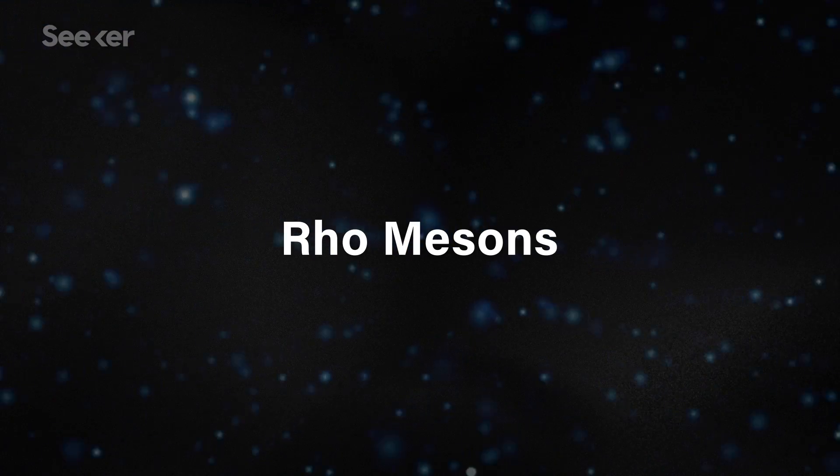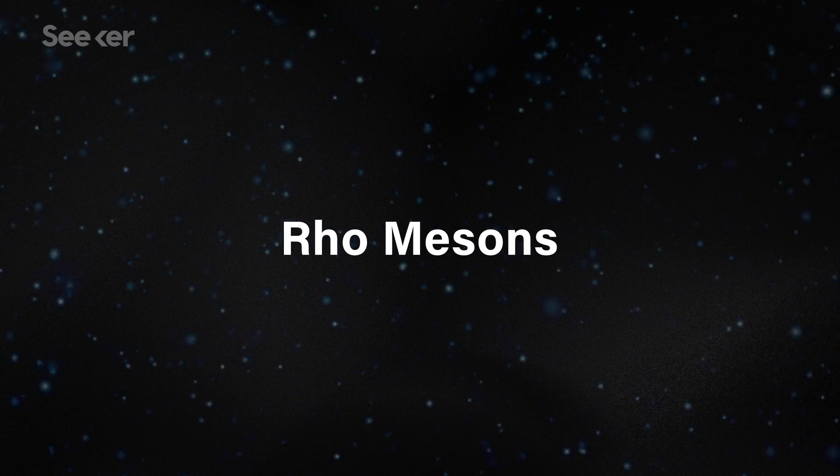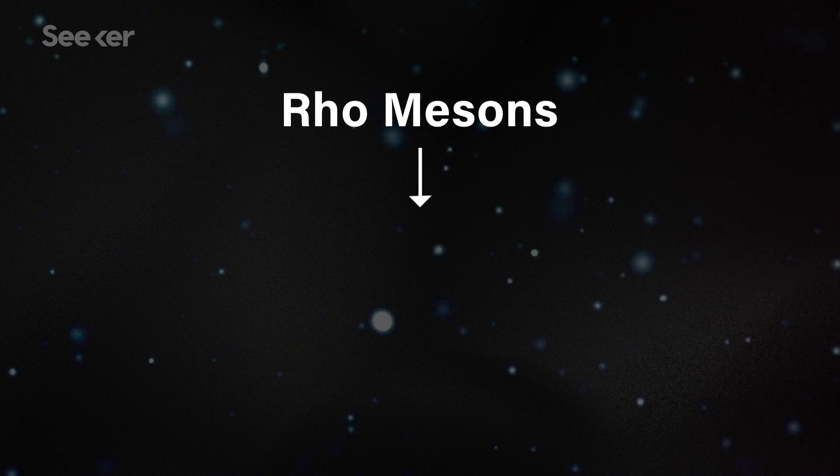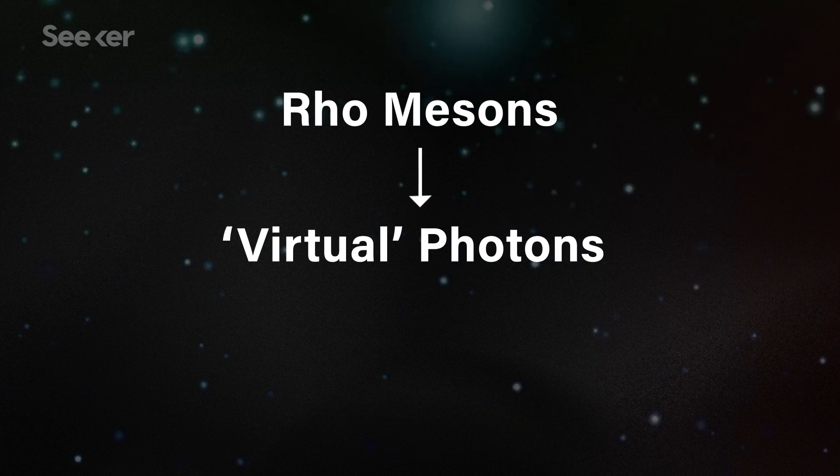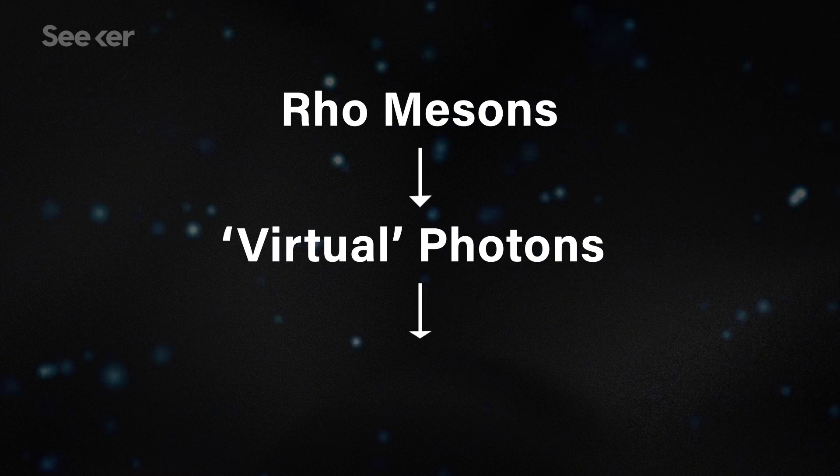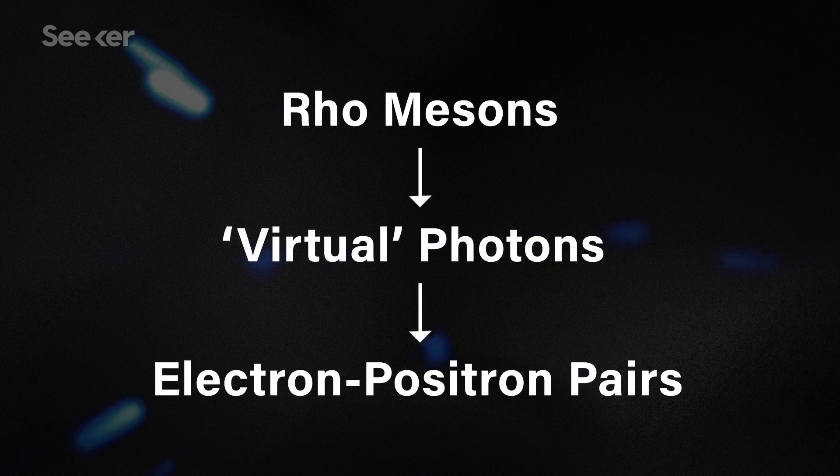After its initial creation, the fireball starts to shed particles called rho mesons, which are made of a quark and an anti-quark. These rho mesons decay into virtual photons, which is the coolest name ever, which then further decay into electron-positron pairs. By using Hades to measure the electron-positron pairs left at the end of the experiment, the researchers gained brand new understanding into the behavior of the quark matter fireball itself.